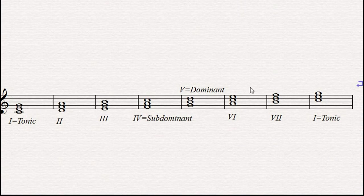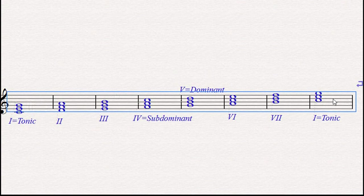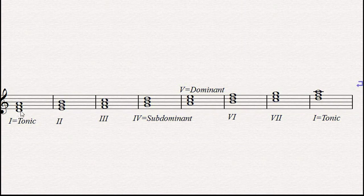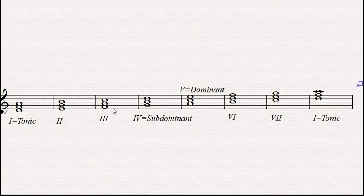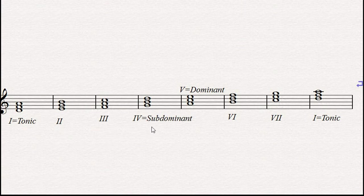What happens if we want to do the same departing from another scale? Say we start from D — we're just going to transpose everything one tone up to build a scale based on D. As you can see: D, E, F, G, A, B, C, and D. In theory we should have the same pattern. The first should be major, second minor, third minor, fourth major, fifth major, sixth minor, and a diminished seventh. Let's see if it's true.